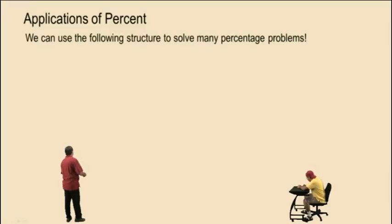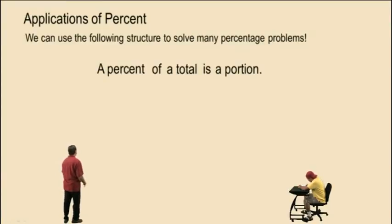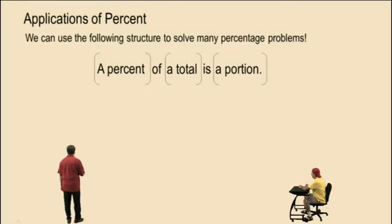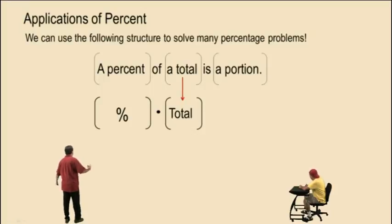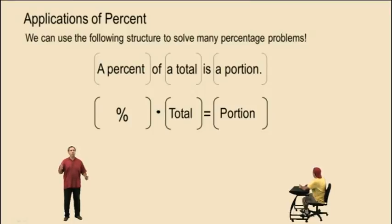We can use the following structure to solve many percentage problems. Here's that structure: a percent of a total is a portion. That's all you have to remember. Now let's translate this word statement into a math statement. A percent of translates into multiplication. Total is the total. Is — that's our equals. Portion is portion. Now in all these problems, all you have to do is find out which one you're looking for: the percent, the total, or the portion.